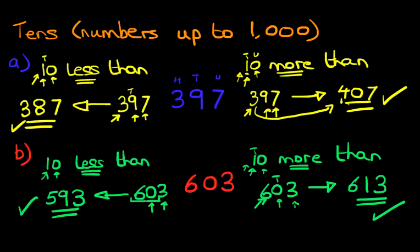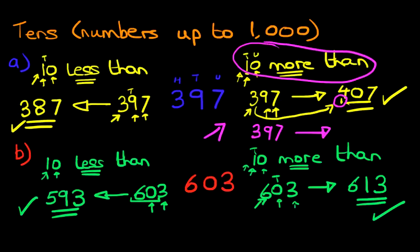I'm just going to work through this one again, where we had 10 more than 397. Do you remember how we carried one here? Let's do it slightly differently. What we're going to do is, we're going to say, right, there's 397. We're going to go forwards, because we're doing 10 more than, so 10 more than 397. Well, the 7 is not going to change, because it's a 0. It's going forward by 0.